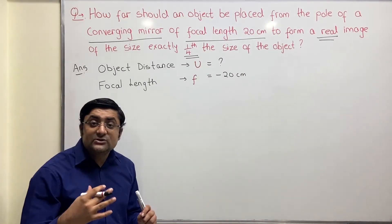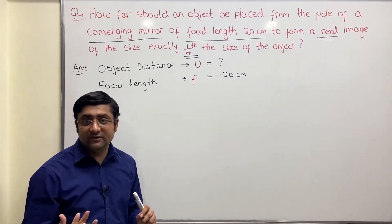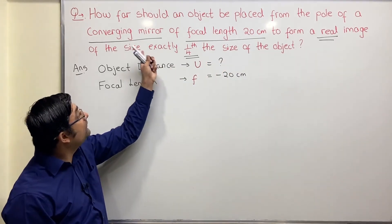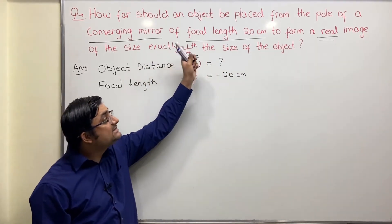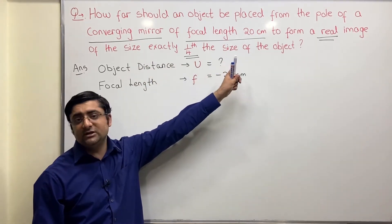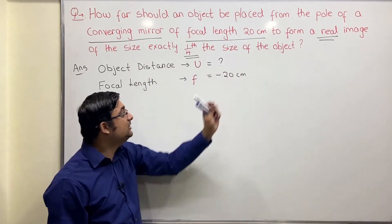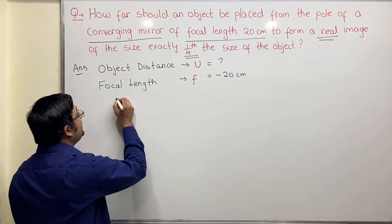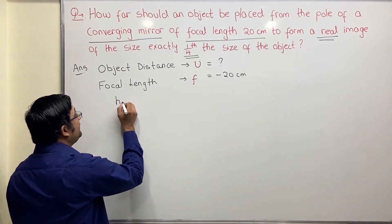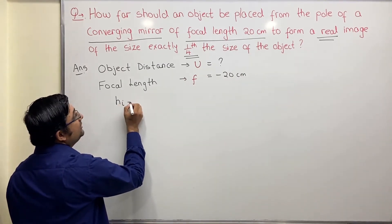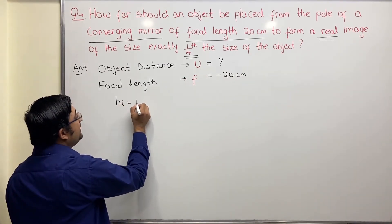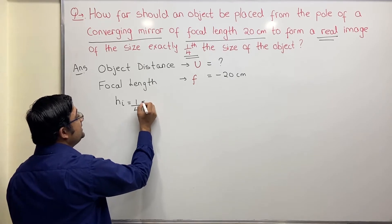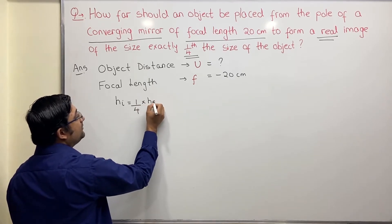We are given the magnification. We want to form an image of the size exactly one fourth the size of the object. So what is given to us is: height of image is one fourth the height of the object.